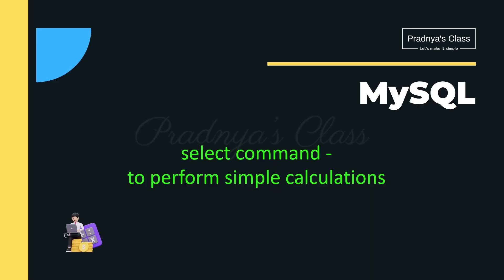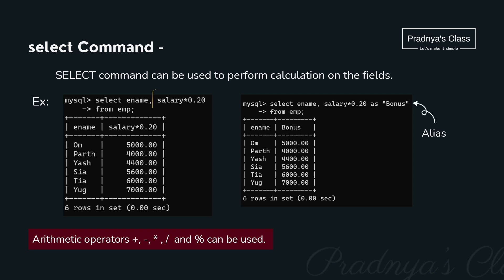We studied many operators usable with the SELECT command: relational operators, logical operators, BETWEEN, NOT BETWEEN, IN, NOT IN, and pattern matching with the LIKE operator. Now we will discuss how to perform simple calculations with SELECT. For example, to calculate a 20% bonus: SELECT salary * 0.20 FROM employee. The column header displays the expression as-is. To rename it meaningfully, use the AS keyword — for example AS bonus.